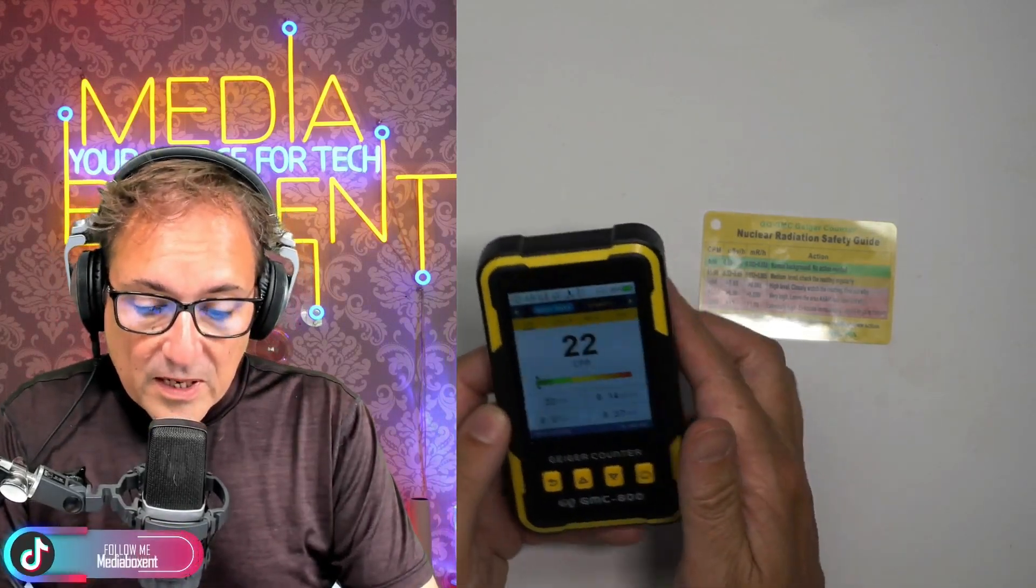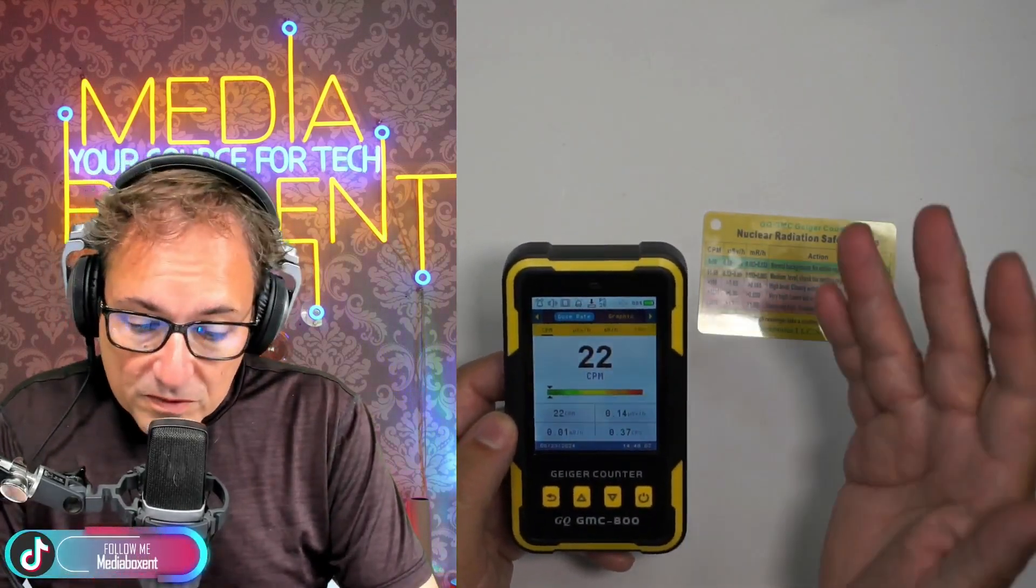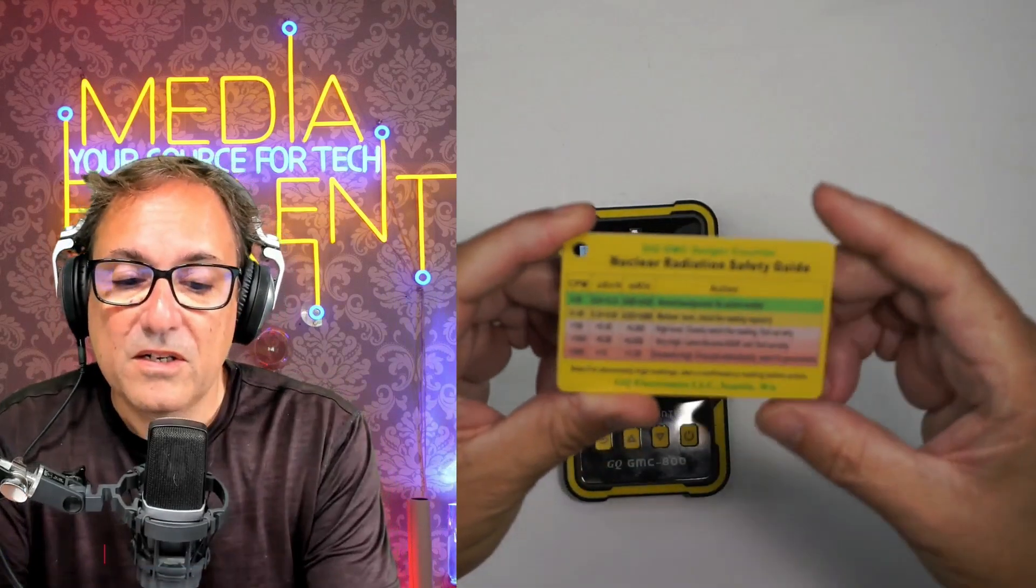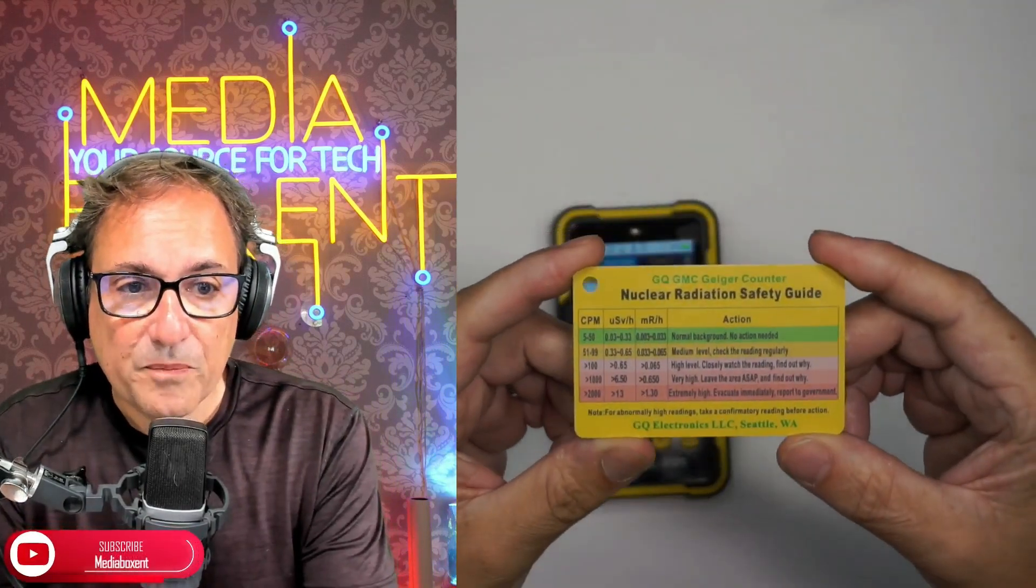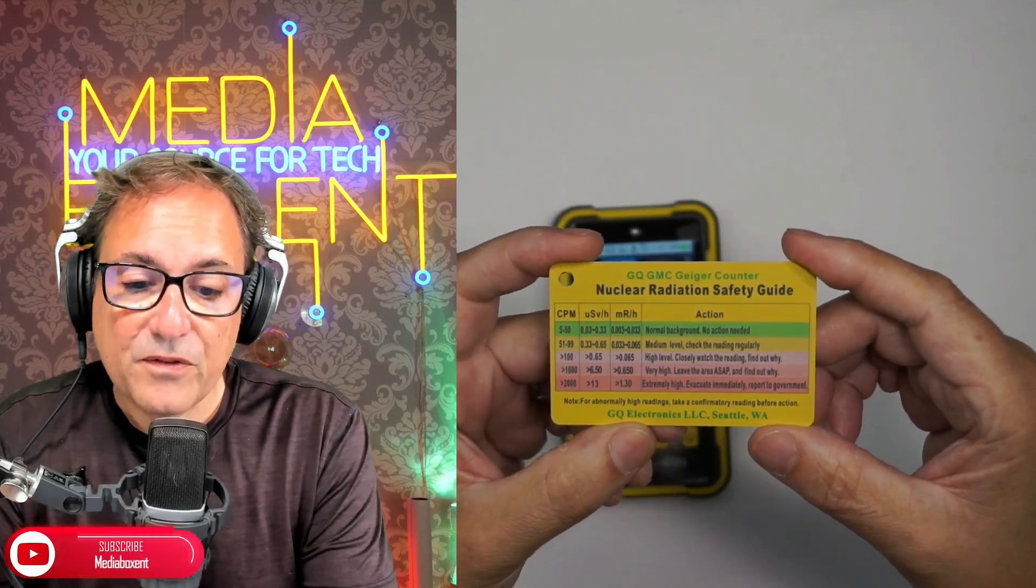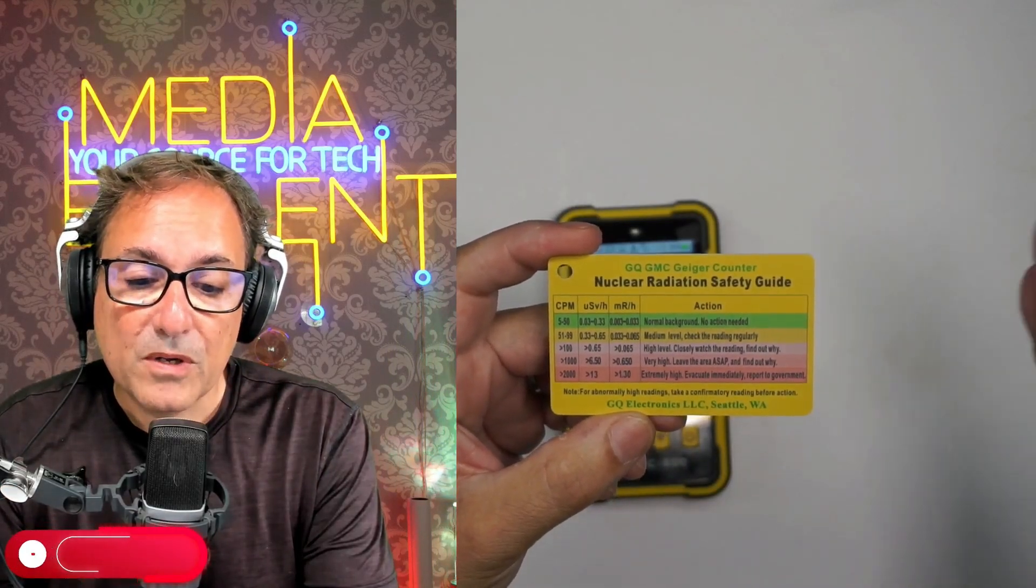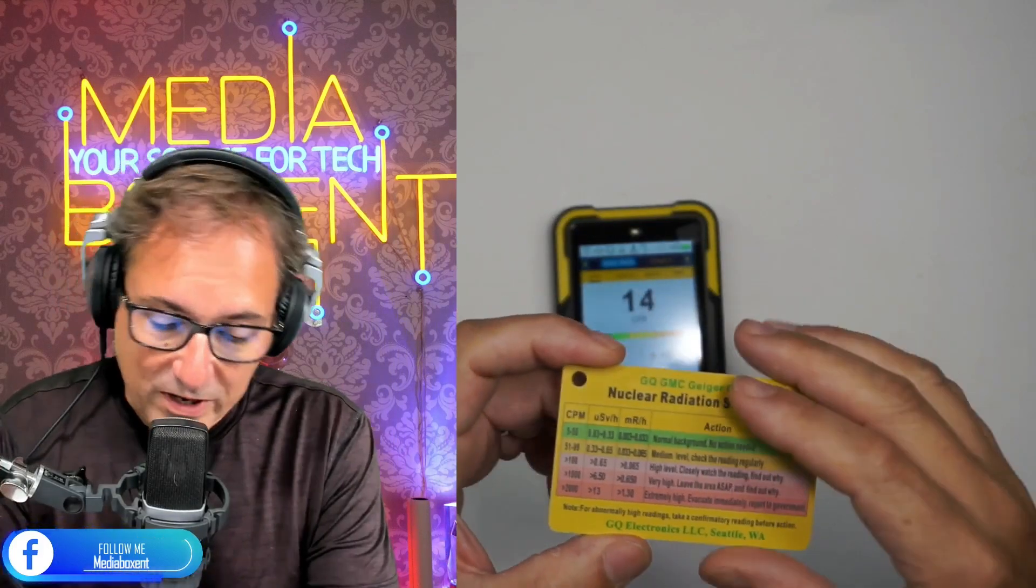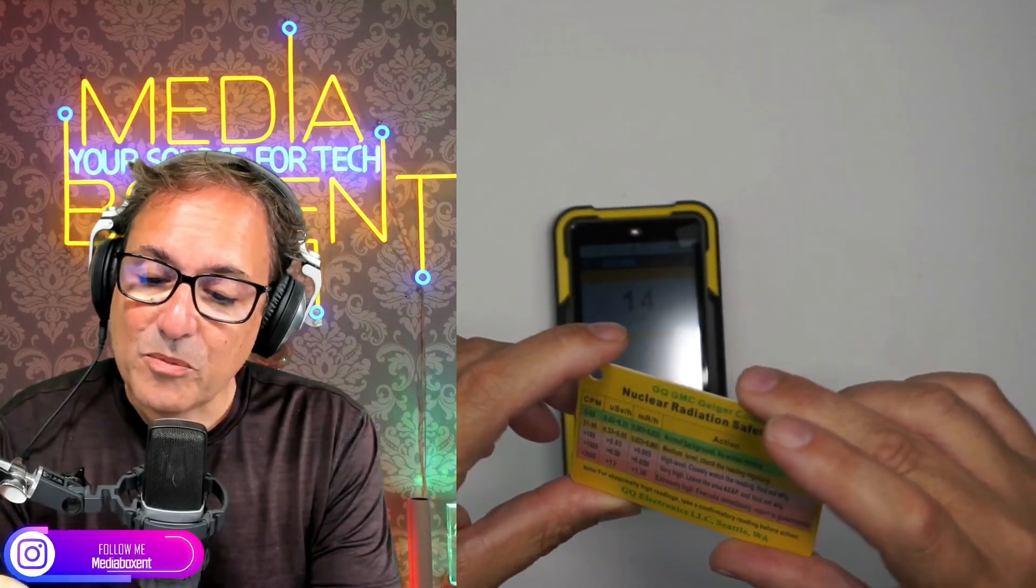So the unit itself is super easy to use, and the default is what they call the counts per minute. And those numbers are going to go up and down. If it's less than 50, we are super okay. Because if we look in here, 5 to 50, we are okay, safety handle. Then it goes from 51 to 99 and so on. And when it gets over 2,000 more, you better run away or something. Here says you should report to the government if it has something that way, that crazy thing.